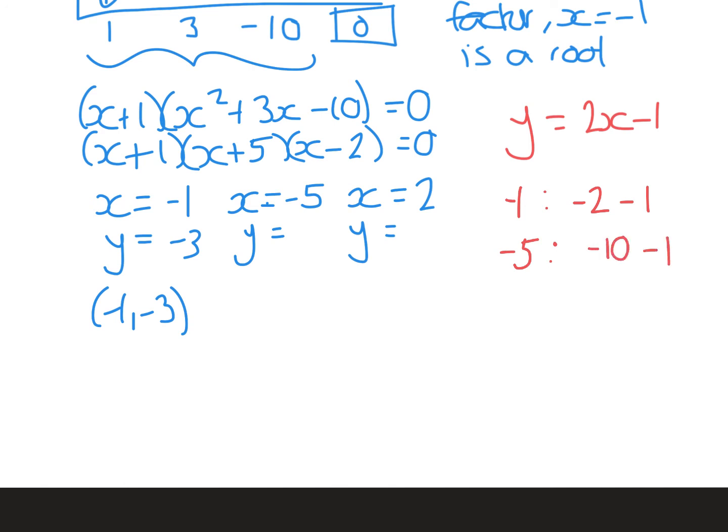And the last one, if you sub in the number 2, doing 2 × 2 is 4. Take away 1 is 3. So your last coordinate is (2, 3). These are your three points of intersection.